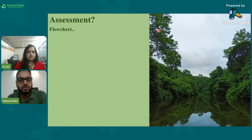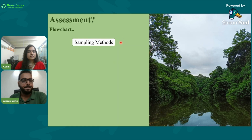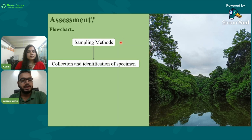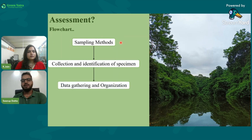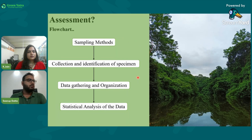To do a biodiversity assessment, the steps are: first, decide what sampling methods to apply in the area. Then, collect and identify the species present. After that, collect and compile the data in a suitable format so that we can further assess it, perform statistical analysis, and come to a conclusion.